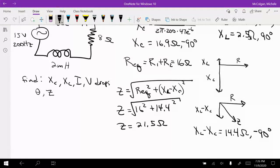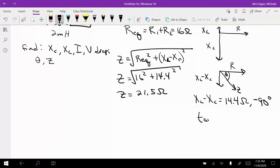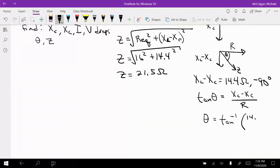And now to figure out the angle, so this is my angle right here, theta. Tan theta is equal to (XL minus XC) over R. So theta, when I plug that in, tan inverse of (XL minus XC), so that's going to be 14.4 over 16. Theta is going to equal negative 42 degrees. And it's negative because it's below the X axis. So my Z, then, is equal to 21.5 ohms and negative 42 degrees.